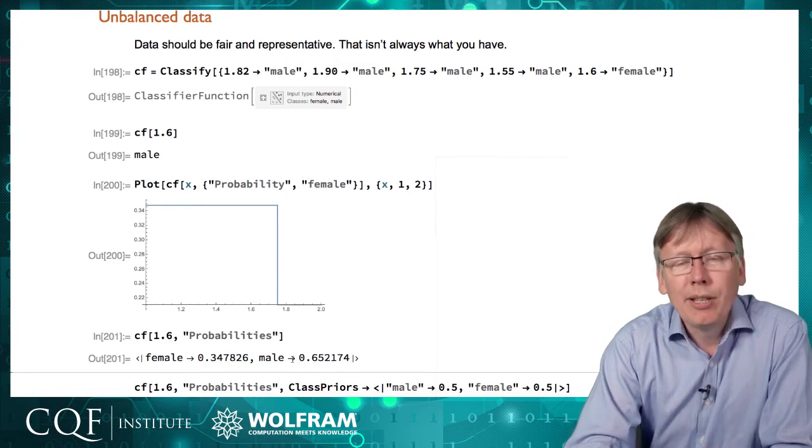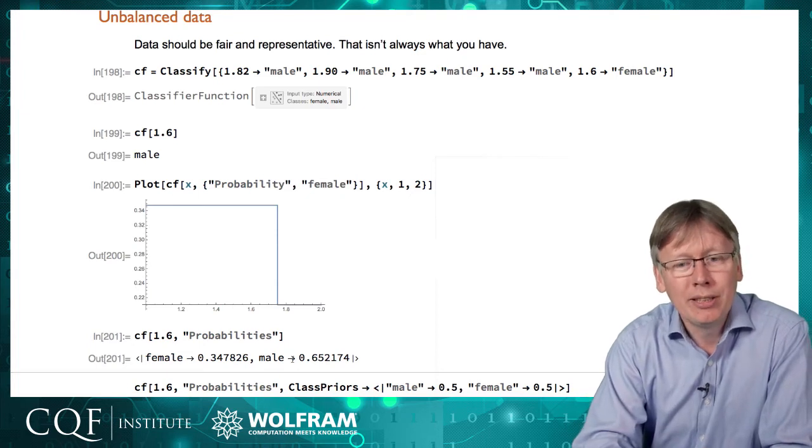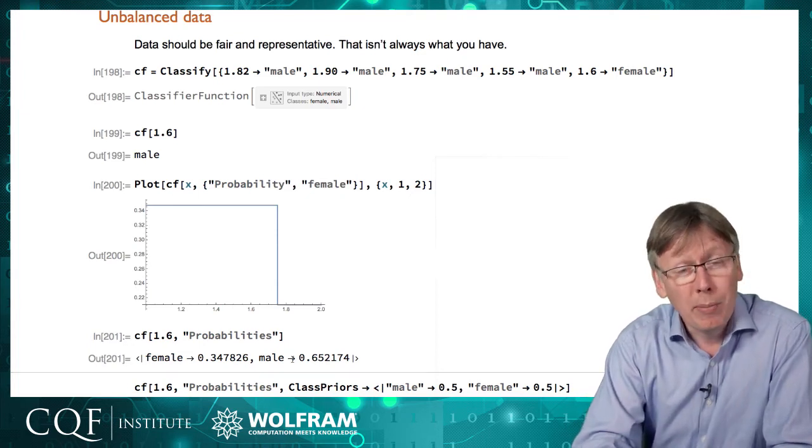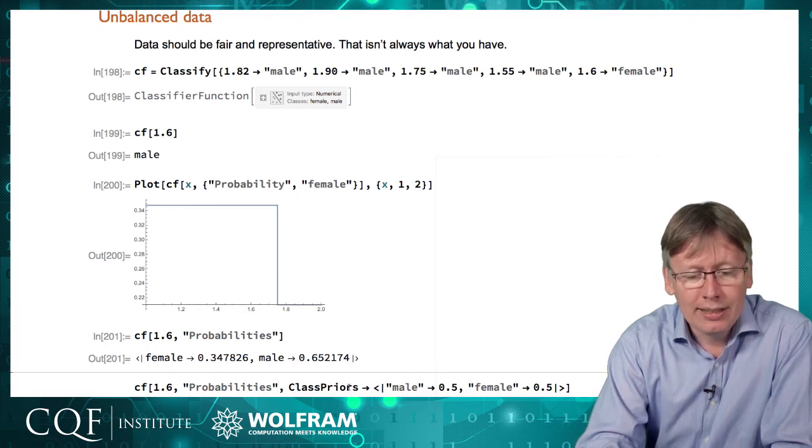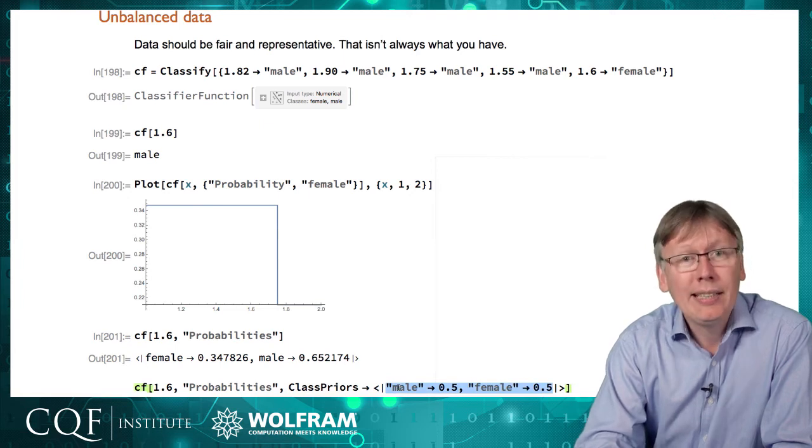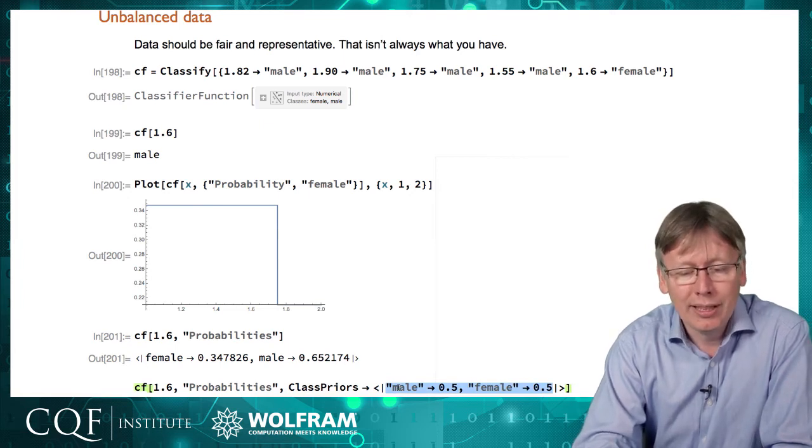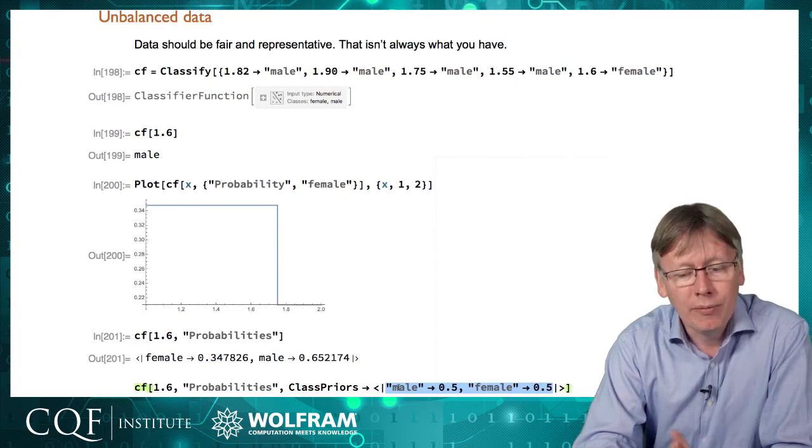So one tweak that we can make is something called class priors and that's us injecting additional information into the system as humans or there may be alternative ways that this gets computed that isn't in the data. And in this case the class priors would say that before you start thinking about the values here's our background probabilities that before you look at the data it's 50-50 male and female.